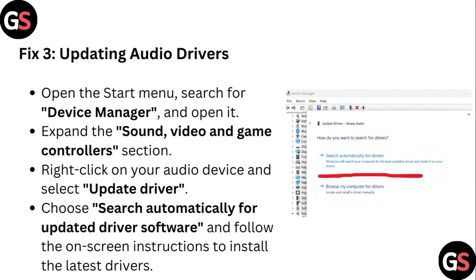Step 3: Updating audio drivers. Open the Start menu, search for Device Manager and open it. Expand the Sound, Video and Game Controllers section. Right-click on your audio device and select Update Driver. Choose to search automatically for updated driver software and follow the on-screen instructions to install the latest driver.